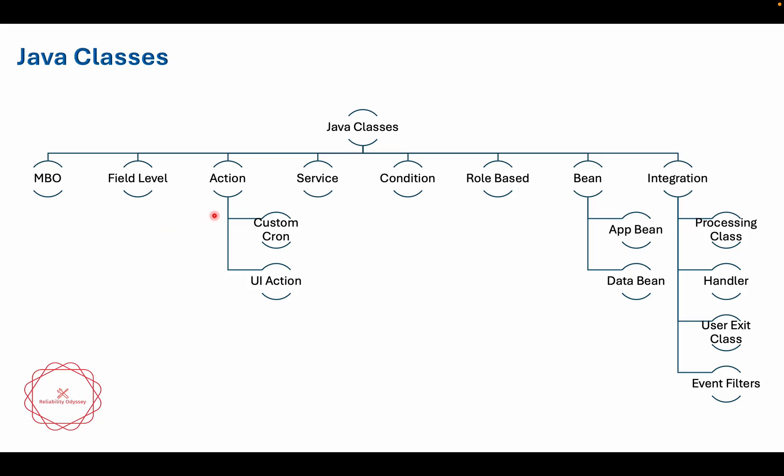Then you have action classes, which come in two kinds: custom cron classes and UI action classes. A UI action is associated with buttons you create or click — whenever you click a button, a class is called, and that is the UI action class. If you are writing a custom cron task in Maximo to run a job on a particular frequency, you will be writing a custom cron action.